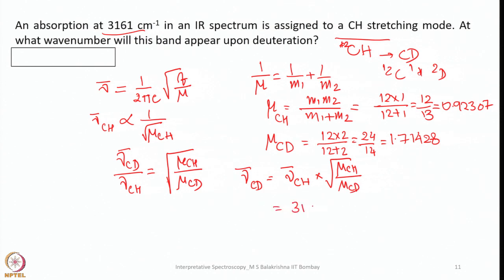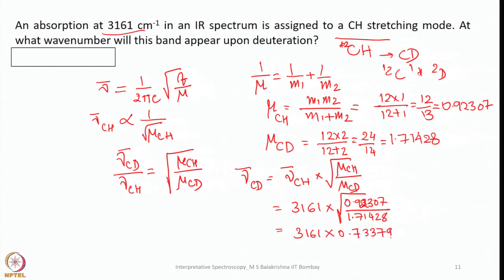With the calculated value of μ(CH) and μ(CD), the stretching frequency for CD in place of CH gives us the band after deuterating. The H band would appear at approximately 2320 cm⁻¹. So this is how you should solve such problems — you should now be able to handle any similar calculation without difficulty.